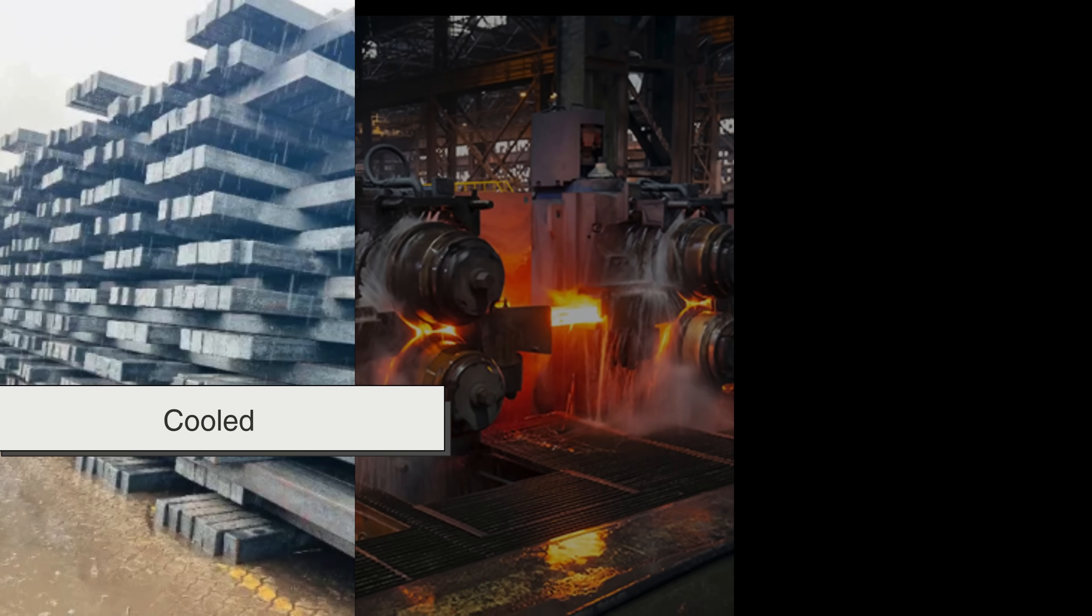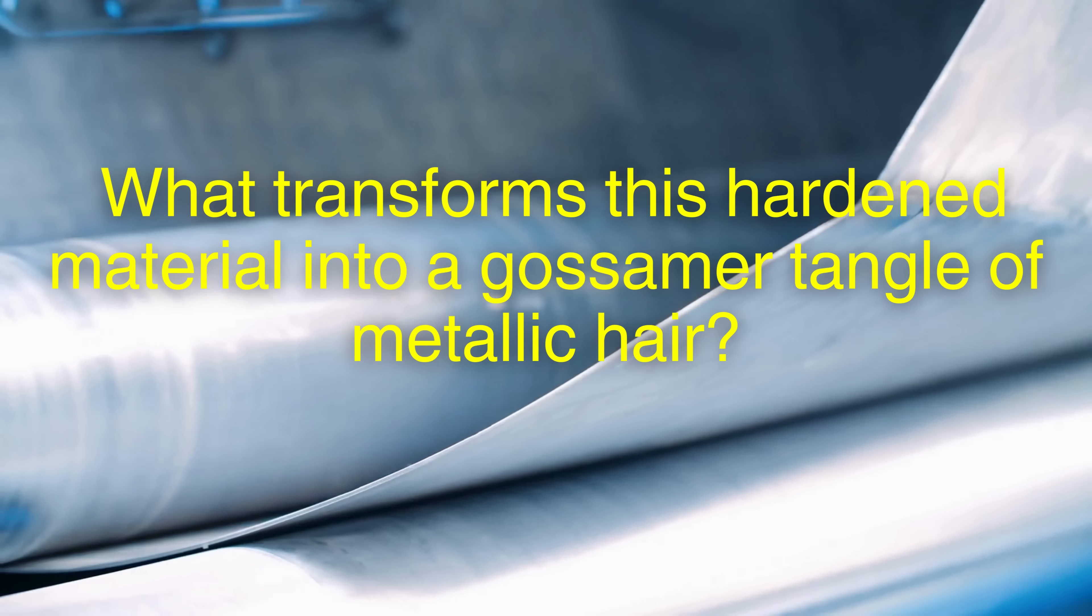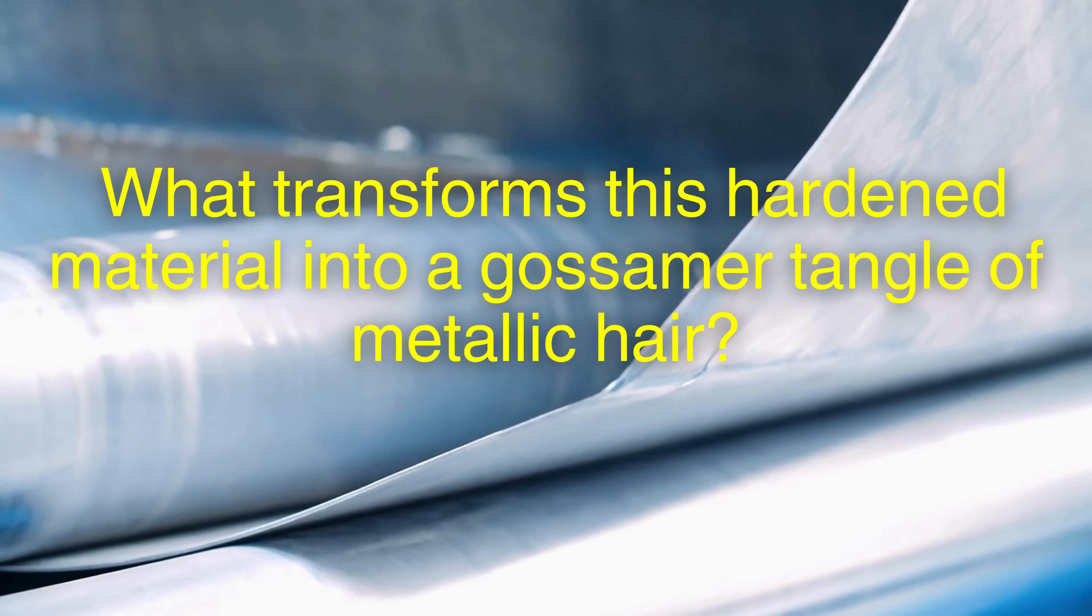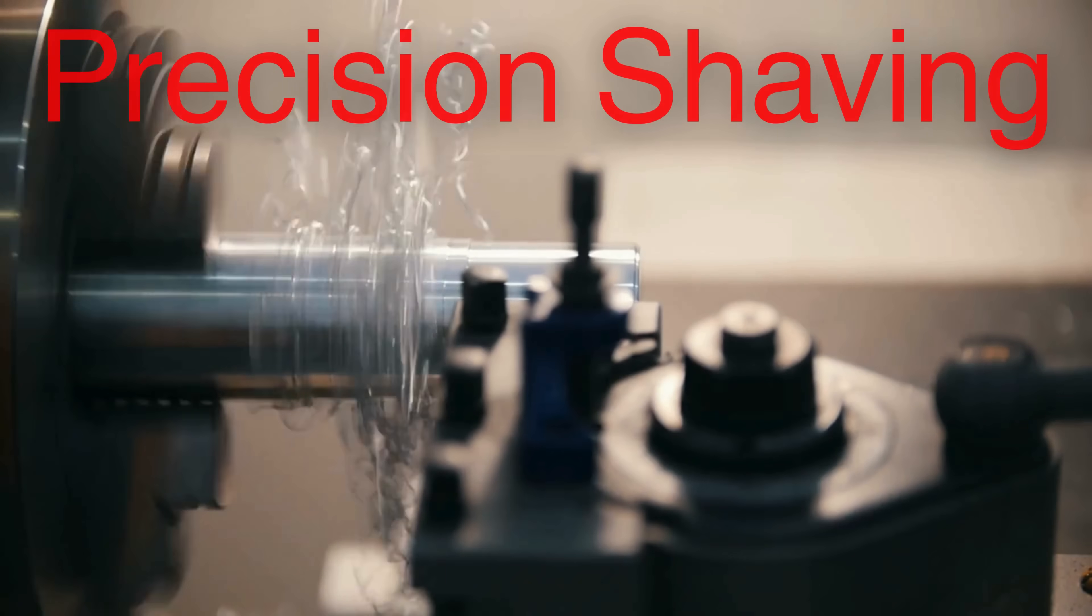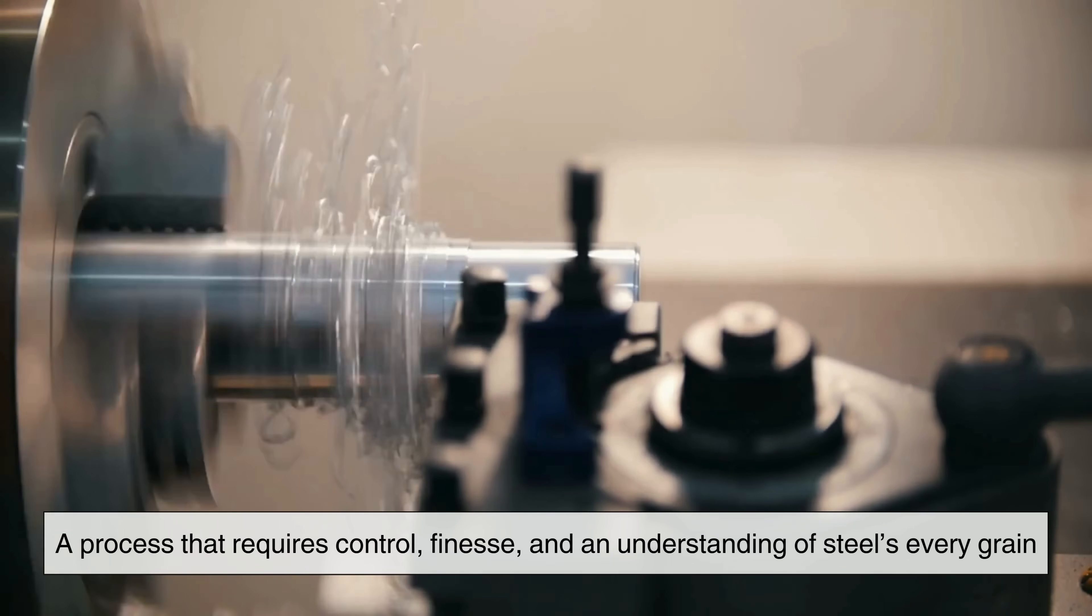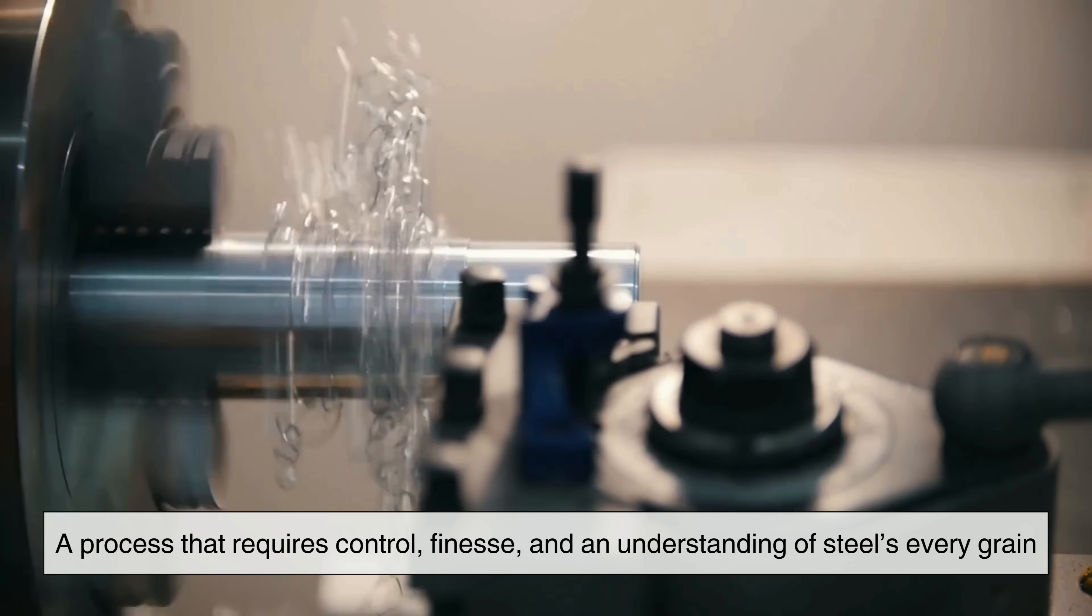This molten mass is then cast into large billets, cooled and rolled into long rods or sheets. But what transforms this hardened material into a gossamer tangle of metallic hair? The secret lies in precision shaving, a process that requires control, finesse and an understanding of steel's every grain.